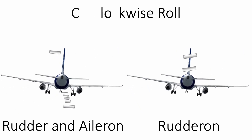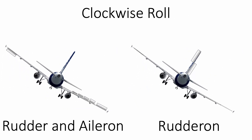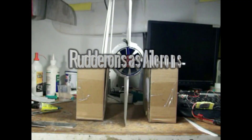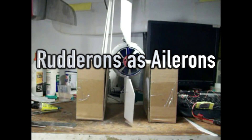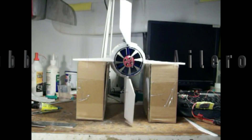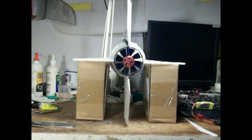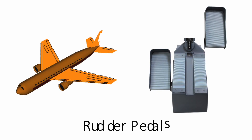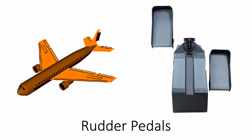In an Airbus 320, this concept is called the spoiler-run effect where the spoilers or speed brakes are used like ailerons. This is directly proportionate to the flight level.